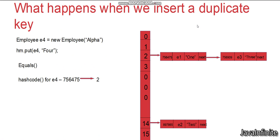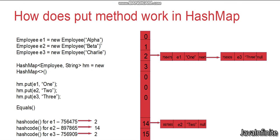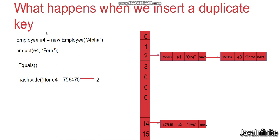Now let's see what happens when you try to insert a duplicate key in HashMap. We have created employee object e4 with the value alpha — the same as e1. We insert e4 as a key with value 4. HashMap calculates the hash code for e4 as 756475 and identifies bucket 2. Since records already exist in bucket 2, HashMap compares the hash codes of the existing records: 756475 matches 756475.